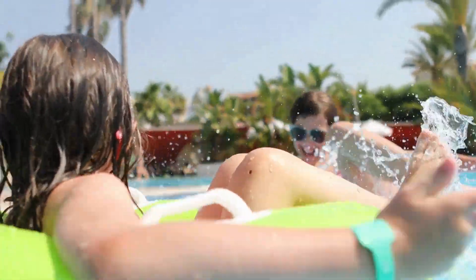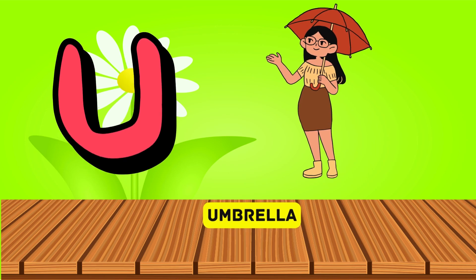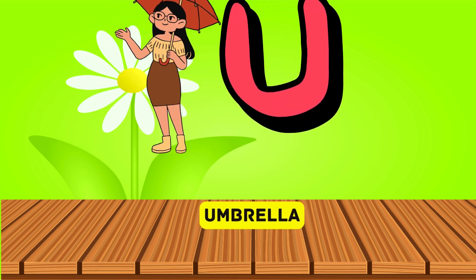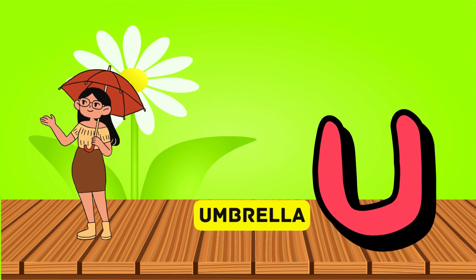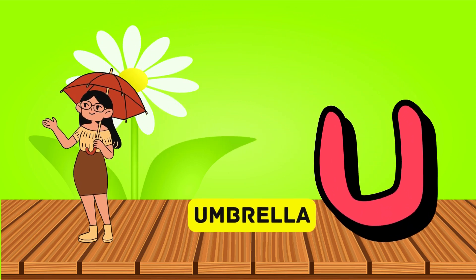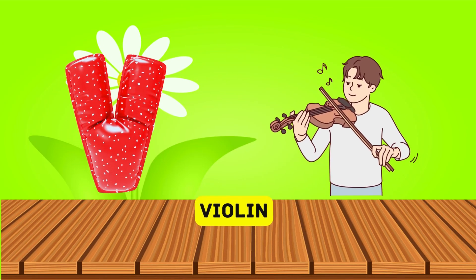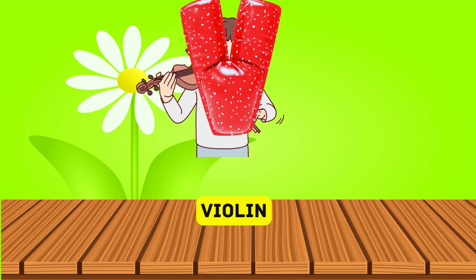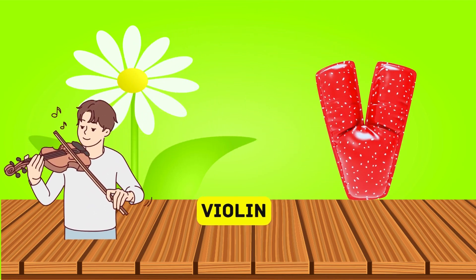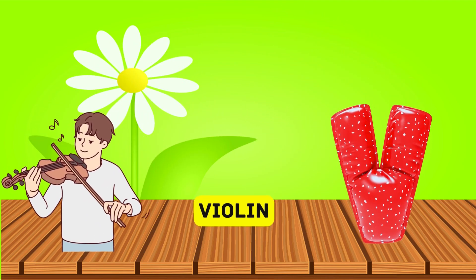U is for umbrella, u-u-u-umbrella. V is for violin, v-v-violin.